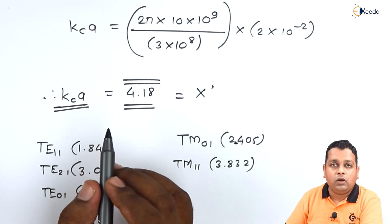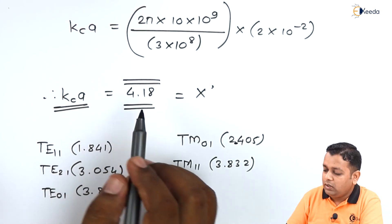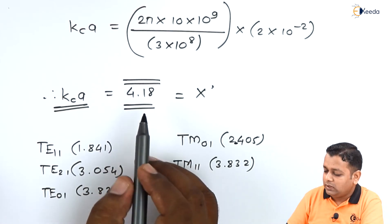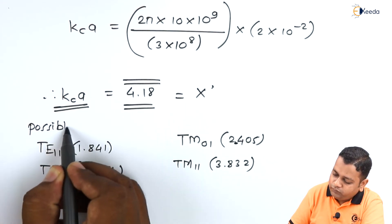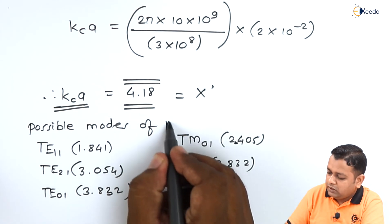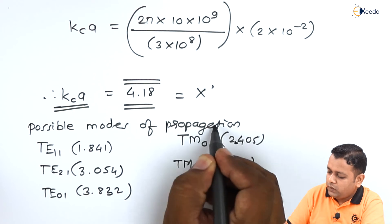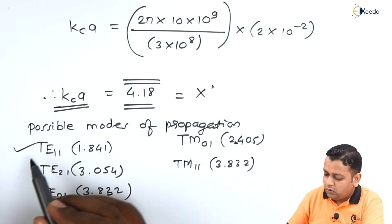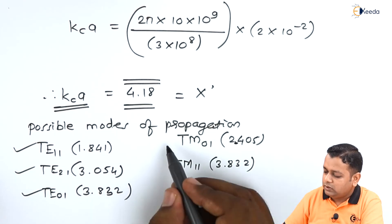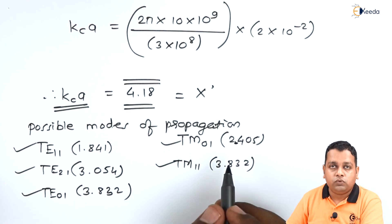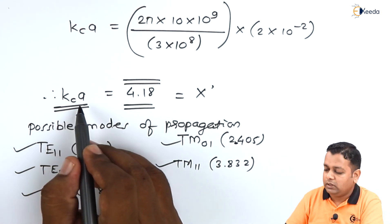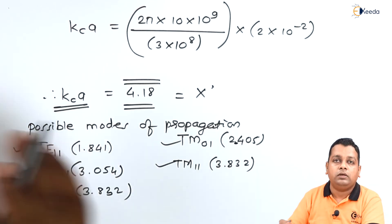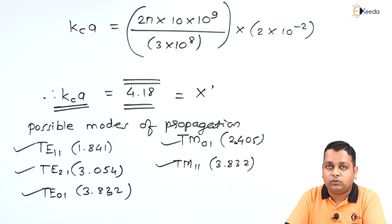For a mode to propagate, we require the value of Kc·a to be smaller than 4.18 (the maximum value obtained for this waveguide). Therefore the possible modes of propagation inside this circular waveguide are TE11, TE21, TE01, TM01, and TM11. Any mode with Kc·a greater than 4.18 will not propagate. This is the answer to this problem.